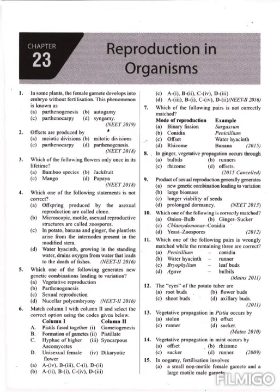In ginger, vegetative propagation occurs through rhizome. Bulbils type is seen in agave, where vegetative buds are seen on the inflorescence axis instead of flowers. Runner type happens in grasses and wild strawberry. Offset type occurs in water hyacinth and Pistia. In case of ginger and turmeric, rhizome type of vegetative reproduction occurs.